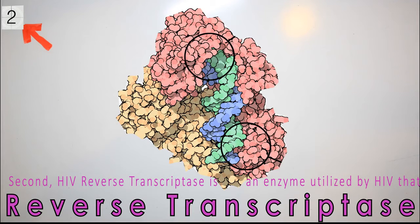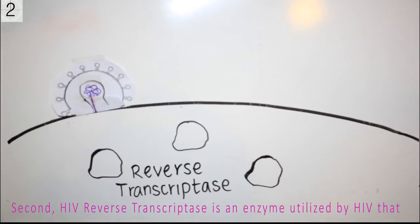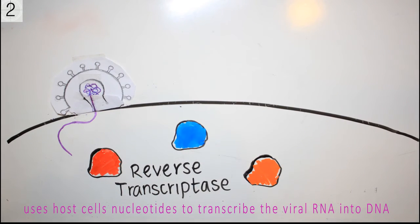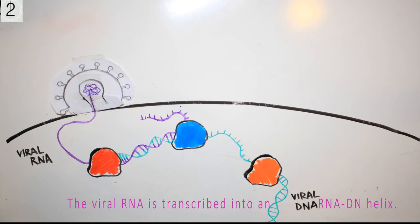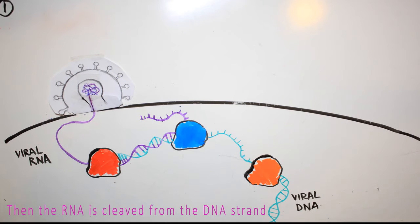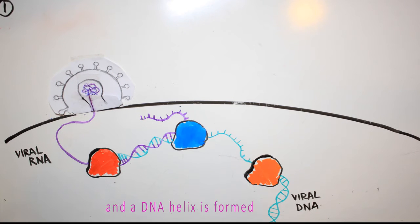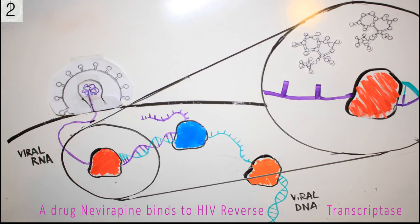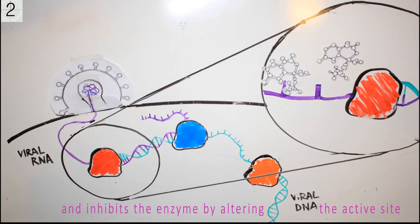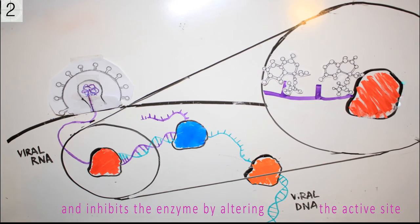Second, HIV reverse transcriptase is an enzyme utilized by HIV that uses host cells' nucleotides to transcribe the viral RNA into DNA. The viral RNA is transcribed into an RNA-DNA helix, then RNA is cleaved from the DNA strand and a DNA helix is formed. The drug nevirapine binds to HIV reverse transcriptase and inhibits the enzyme by altering the active site.